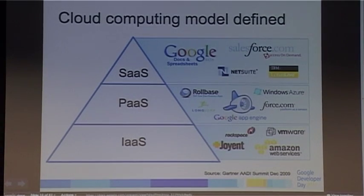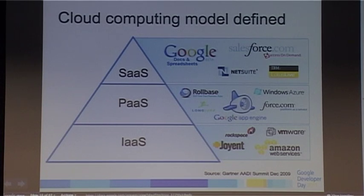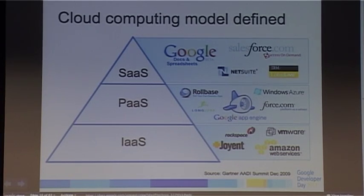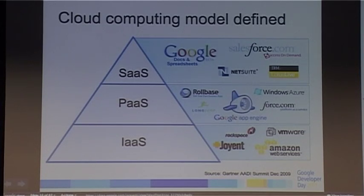The cloud model is made of three layers. The lowest layer is Infrastructure as a Service — companies who provide machines or low-level infrastructure, like Amazon EC2. The second layer is Platform as a Service — companies that provide a way to simply host your application and run your code without worrying about machines. The last layer is Software as a Service, which is where Google Apps sits — Google Docs, Spreadsheet, Calendar, etc. It's software that runs in the cloud, accessible through a web browser.